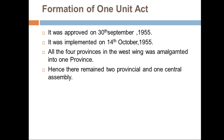Hence there remained two provincial wings — East Wing and West Wing — and one central assembly. This is all for today. In the next lecture we will be doing the constitution. Thank you.